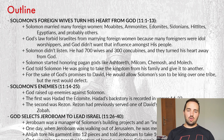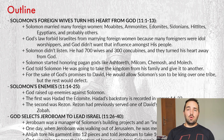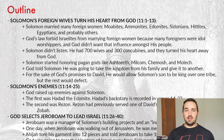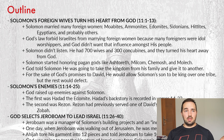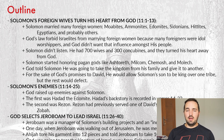Section number one, verses one through 13: Solomon's foreign wives turn his heart away from God. Solomon married many — and I mean many — foreign women: Moabites, Ammonites, Edomites, Sidonians, Hittites, Egyptians, and probably women from other nations. God's law actually forbid Israelites from marrying foreign women — not because you didn't like them, but because foreign women were often idol worshippers. These foreign nations were pagans; they worshipped false gods, and God didn't want that influence amongst his people. Solomon didn't listen — at all. He married 700 wives and had 300 concubines, and they turned his heart away from God. Solomon started honoring some of these pagan gods like Ashtaroth, Milcom, Chemosh, and Molech. If you know anything about the worship of those gods, you'll know there are some terrible things involved, things that God absolutely forbid.